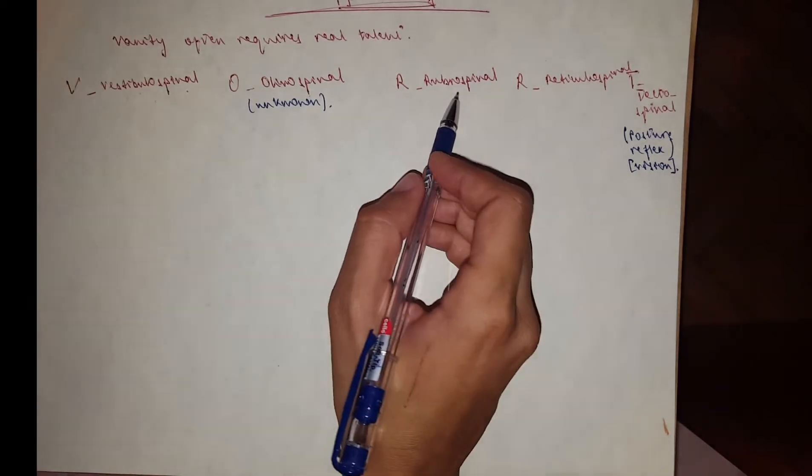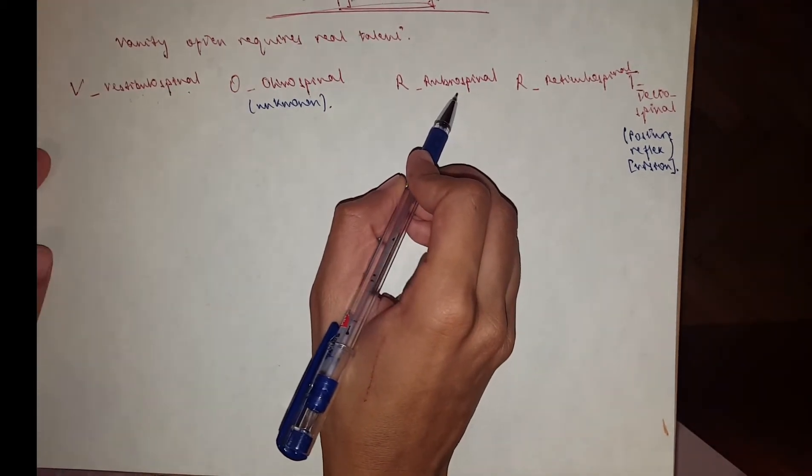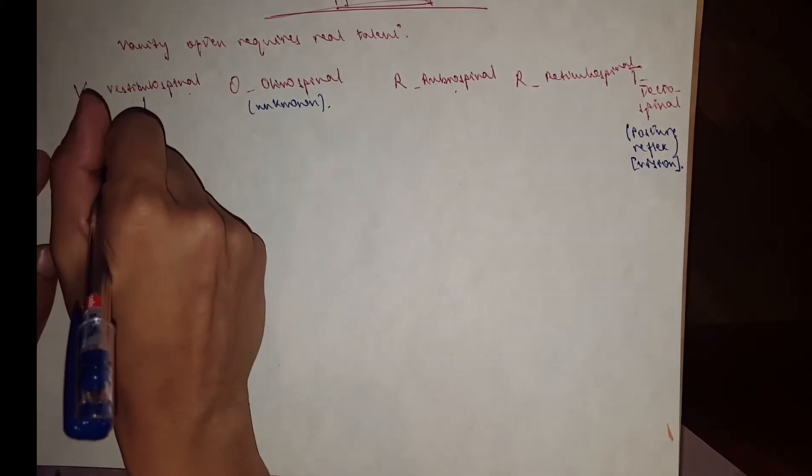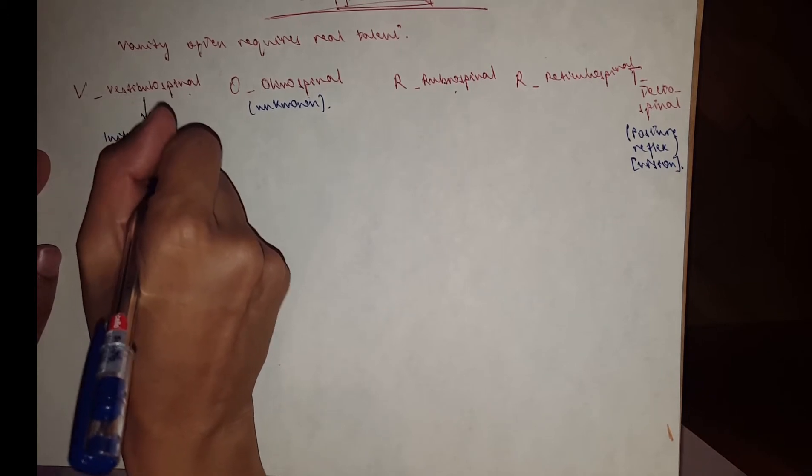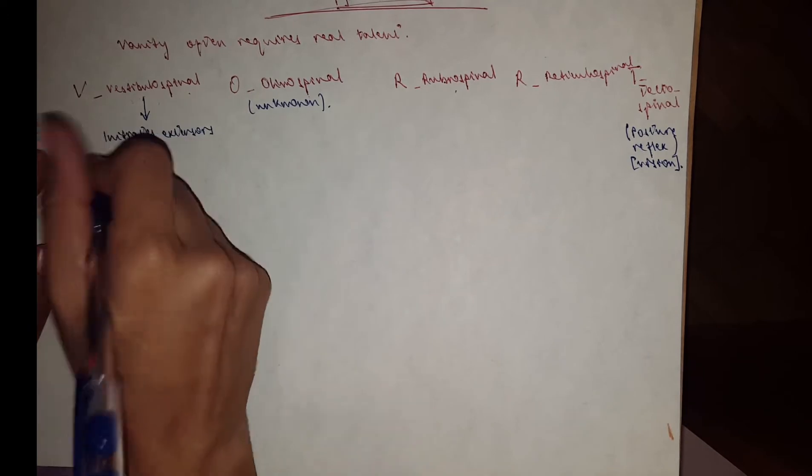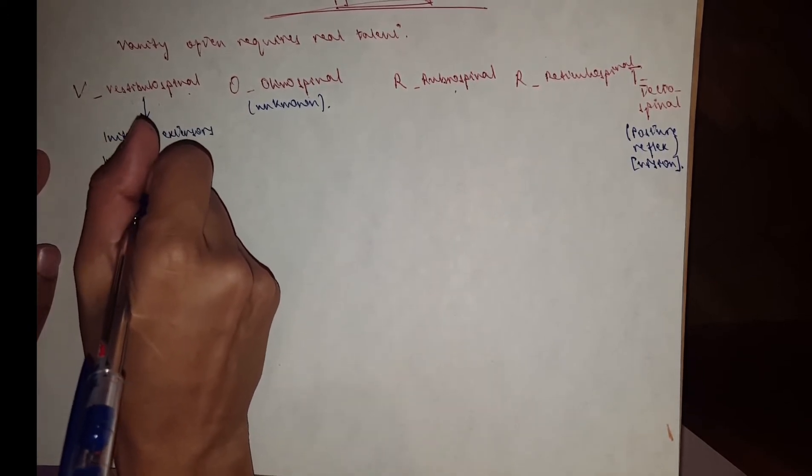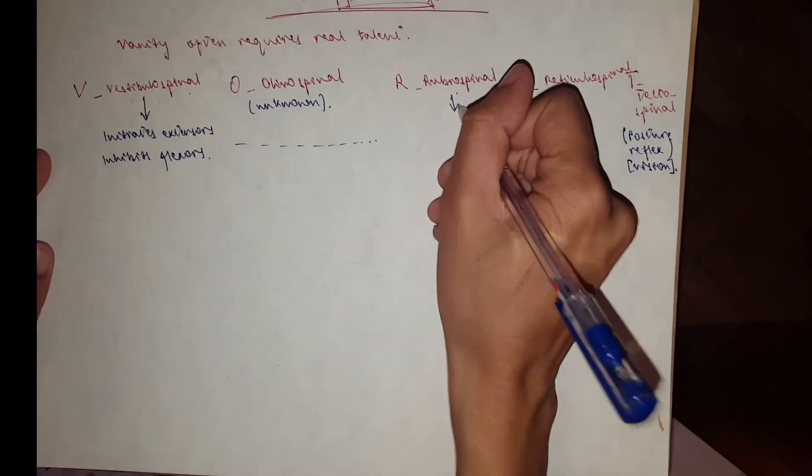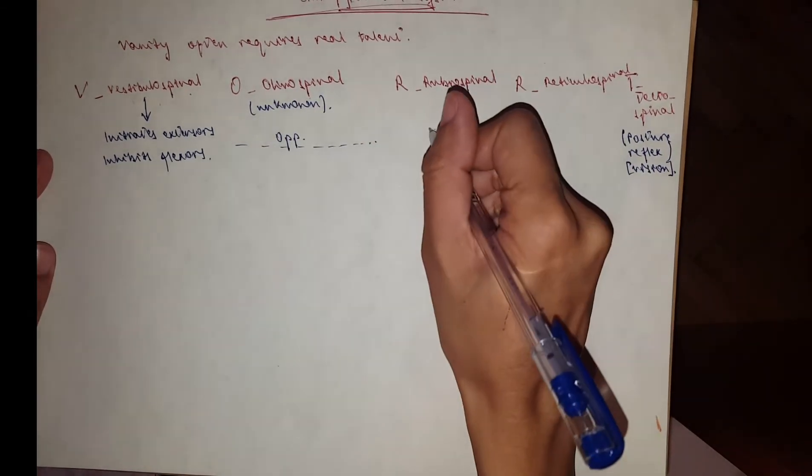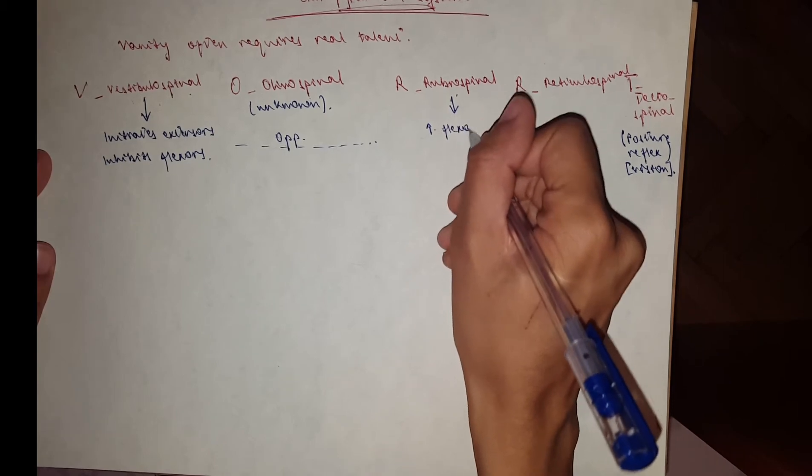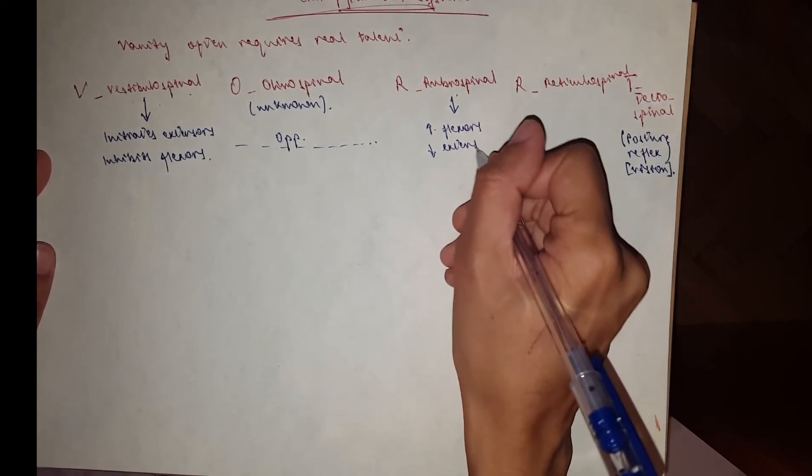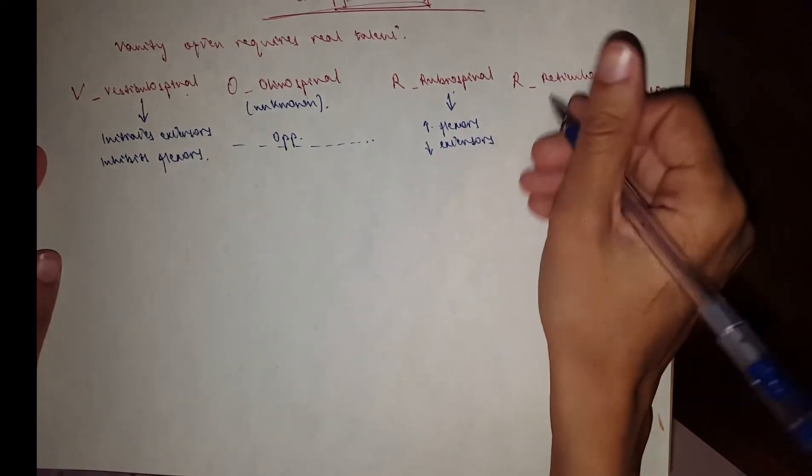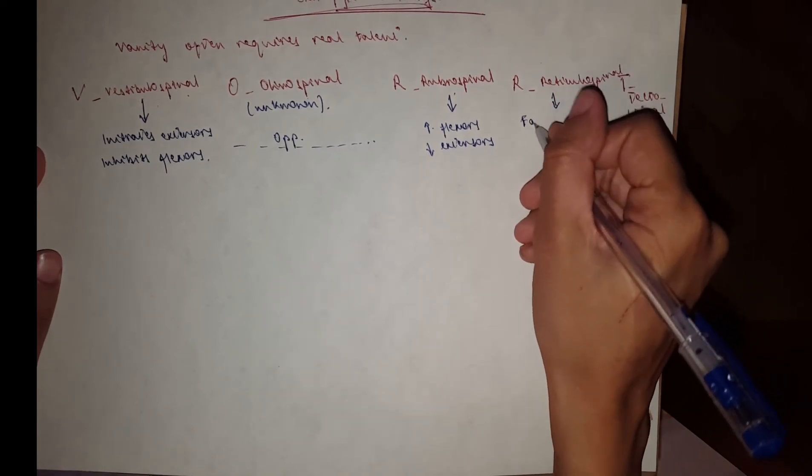Vestibulospinal and rubrospinal do not like each other much, they do the opposite of each other. If you know the function of vestibulospinal, you know exactly what the rubrospinal will do. The vestibulospinal initiates the extensor muscles and inhibits the flexor muscles. The rubrospinal does the opposite, it initiates the flexors and inhibits the extensors. Then the reticulospinal facilitates voluntary reflexes.